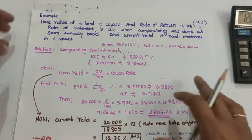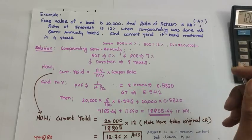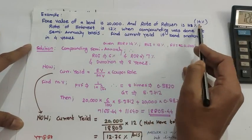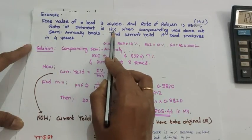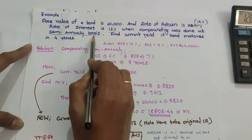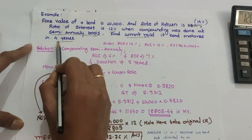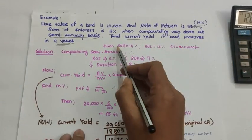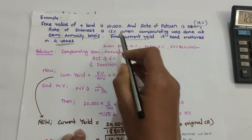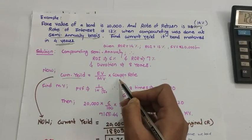In the next slide we are going to see some important numerical that are generally asked in exams around four or five months. Face value of a bond is 20,000, rate of return is 14%, rate of interest (coupon rate) is 12%, compounding is done on a semi-annual basis. We have to find the current yield if the bond matures in four years. The formula for current yield is: face value divided by market value, multiplied by coupon rate.